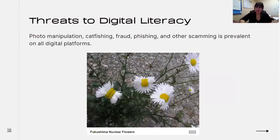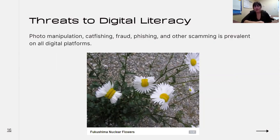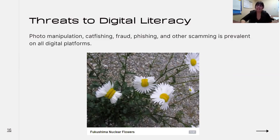Photo manipulation isn't always malicious — sometimes people just try to figure out what they can convince others of. One example found online claimed these were flowers impacted by nuclear power and that they had grown this way, when in reality it was simply a manipulated photo. There's no immediate harm in seeing something like this, but in the end it's just not true.